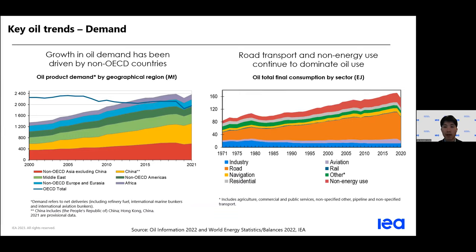Within the final demand sector, as expected, we see a large dip in 2020 across all end users. Historically, road transport has been the main oil-consuming sector, along with non-energy use, which refers mostly to the use of oil as feedstocks into chemical and petrochemical industries. Note that these sectoral demand data are still up to 2020, so we are not seeing the recoveries after the COVID period, but new 2021 data will soon be released.